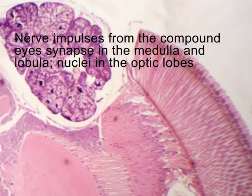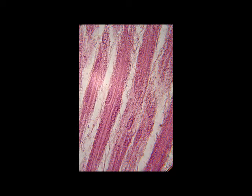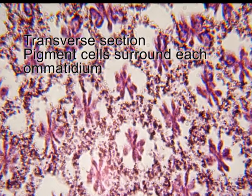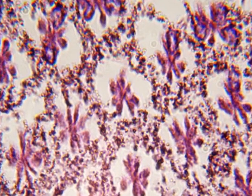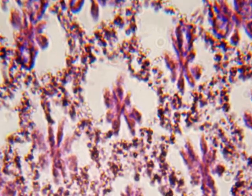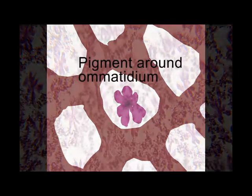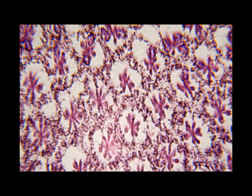It is important that the retinular cells in each ommatidium are only activated by light coming in through the lens for that particular ommatidium, and are not affected by light entering into neighbouring ommatidia. To make sure that light does not spread from one unit to another, each ommatidium is surrounded by fine pigment granules in pigment cells. These confine the light to that specific ommatidium, and it is these pigment cells which give the eyes of the bee their distinctive colour.